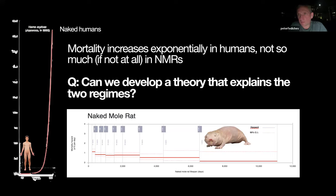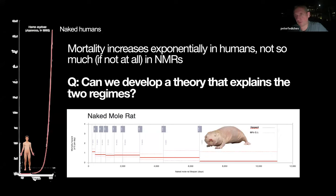On the right you have naked mole rats — this is a picture from a paper by Calico/Google. They published it with a title insisting that these animals are defying the Gompertz slope. There is no log on the vertical scale, and you can see that over a very long time there is no appreciable measurable change in mortality. My question was: if I want to do something about aging, I should look at the largest effects possible — and the difference between these two curves is the largest effect possible.